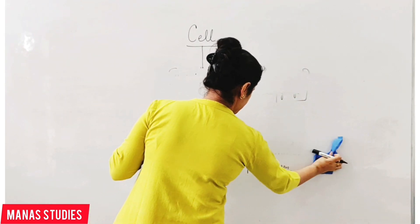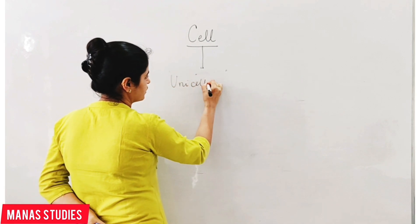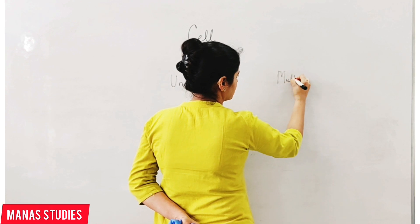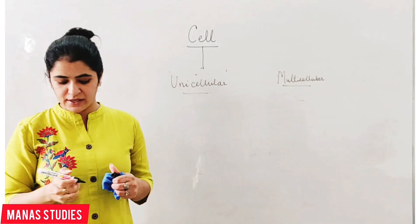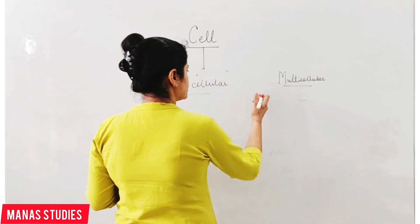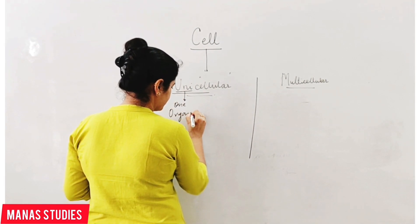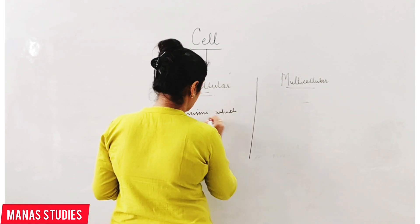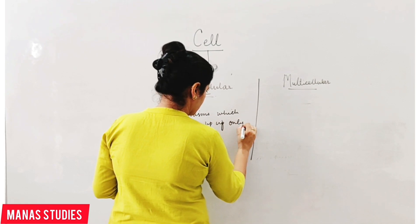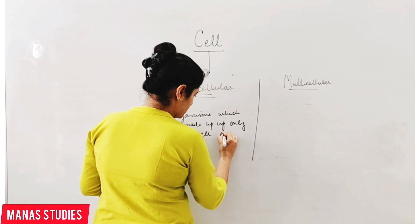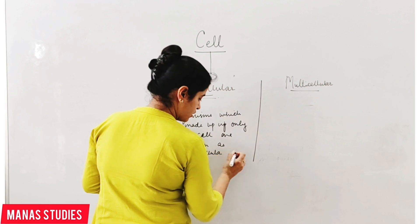On the basis of number of cells present in an organism, organisms are of two types: unicellular and multicellular. What do you mean by unicellular and multicellular? Unicellular organisms are those — uni means one — so organisms which are made up of only one cell are known as unicellular organisms.